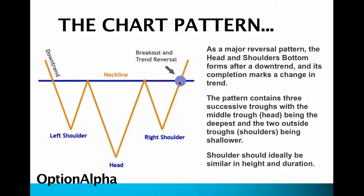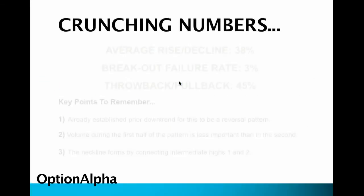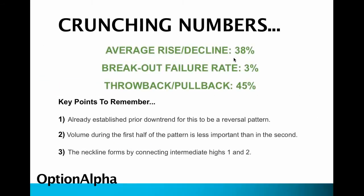Crunching the numbers: the average rise of the inverse head and shoulders pattern is about 38% after the breakout. This is a massive bottom — it's usually going to take a little bit to form because you have to build up all of those reserve buyers. The breakout failure rate for this pattern is very low at just 3%. A lot of people try to trade it right before the breakout, anticipating it, and they get wildly disappointed. This has happened on the S&P 500, Dow, NASDAQ, and Russell — so wait for the actual breakout.